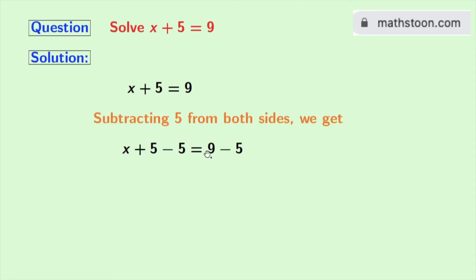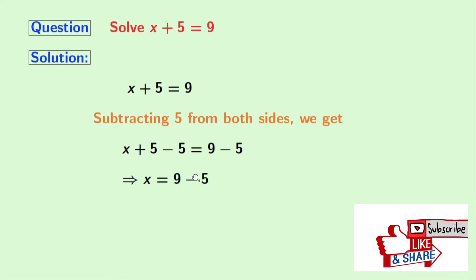Look that in the left-hand side we have plus 5 minus 5 which is 0, so in the left-hand side we have x. In the right-hand side we have 9 minus 5, so finally we get x is equal to 4.